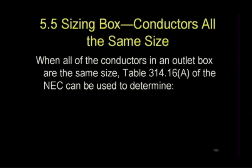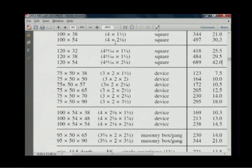Let's go to sizing. When all the conductors in an outlet box are the same size, Table 314.16(A) of the NEC can be used. It's kind of like annex C, isn't it? Well, then maybe they should just make this an annex. Let's not give them that idea.